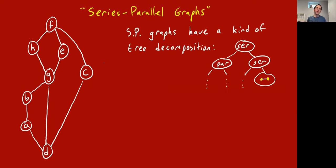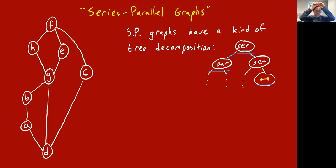A series-parallel graph has a kind of tree decomposition — it's a tree representing how the graph was created according to the series-parallel rules. In this tree decomposition, each node is either labeled series or parallel, or it's a leaf representing a single edge, which is the base case. A series or parallel node always has two children, pointing down to the two graphs which when combined give the original graph.